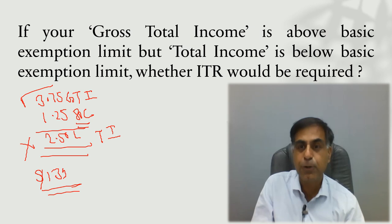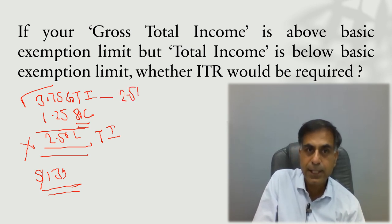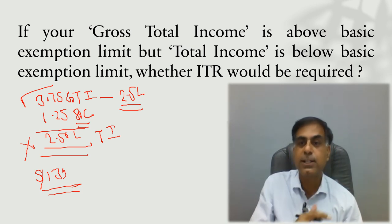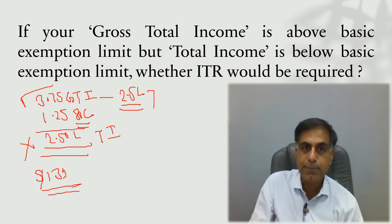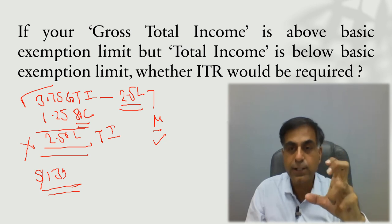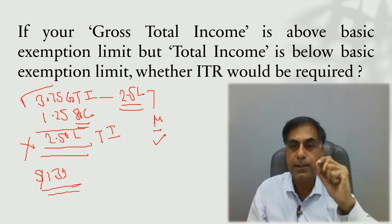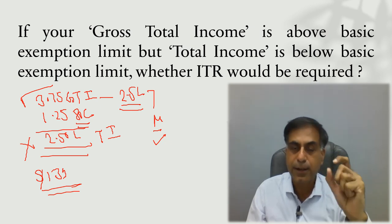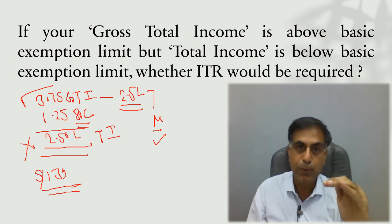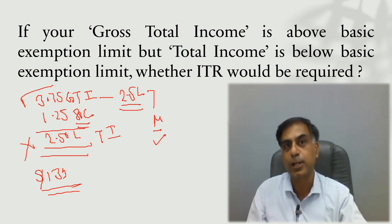If you go by Rs. 3.75 lakh gross total income for a 35-year-old person, that is above Rs. 2.5 lakh, so it is mandatory for this person to file ITR. A very important point: the criteria to determine income from the point of view of ITR filing is not total income — the criteria is gross total income. You have to go by that approach.